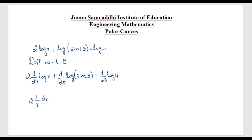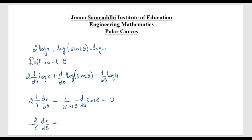Now (d/dθ)(log R) = (1/R)(dR/dθ), so we write 2·(1/R)(dR/dθ) + (1/sin2θ)·(d/dθ)(sin2θ) = 0. Applying the chain rule, (d/dθ)(sin2θ) = cos2θ · 2 = 2cos2θ. So the differentiation of log 4 is constant, giving 0.